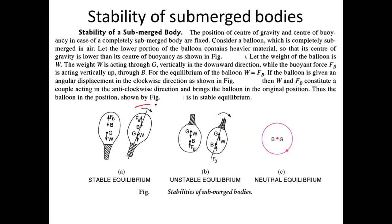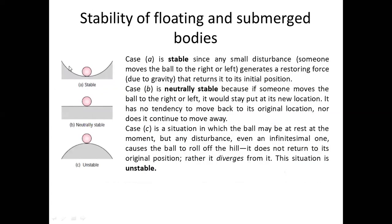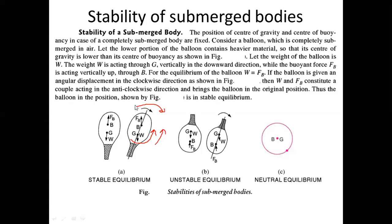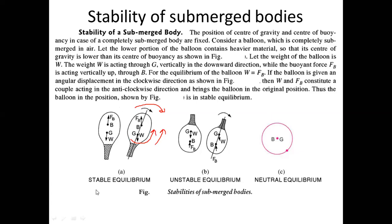The applied torque is in the clockwise direction. But the upward buoyancy force and downward weight force are opposite forces, and they form a couple in the anticlockwise direction. The applied couple is clockwise but the generated couple is anticlockwise. This generated couple will try to rotate the body back to its normal condition — just like the ball returning to its original position. So this body will try to regain its original condition, making this a stable condition, also called stable equilibrium.